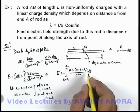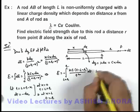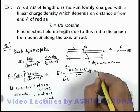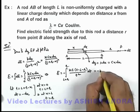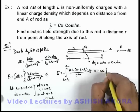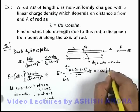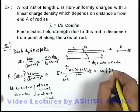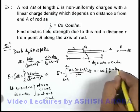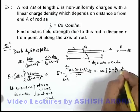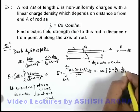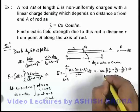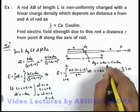Substituting into the integral, E = −kc · ∫(t − l − r) / t² · (−dt) from l+r to r, which simplifies to −kc · ∫[1/t − (l+r)/t²] dt, with limits from l + r to r.